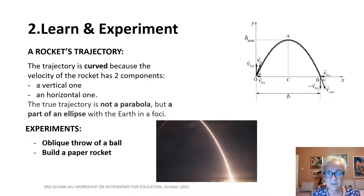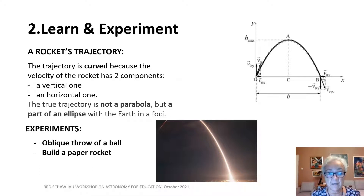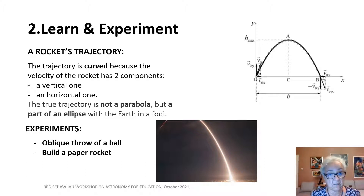The students learned about the trajectory of the rocket — that this trajectory is curved because the velocity of the rocket has two components: one vertical and one horizontal. The horizontal one is the rotational velocity of the Earth around its axis. The true trajectory is not a parabola, but a part of an ellipse with the Earth at one focus.